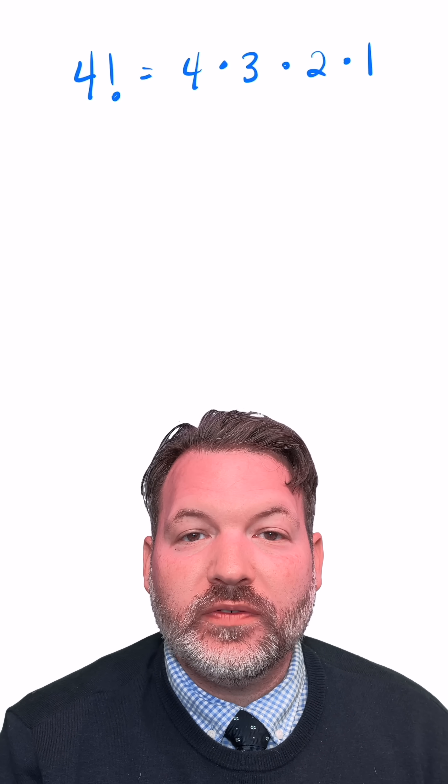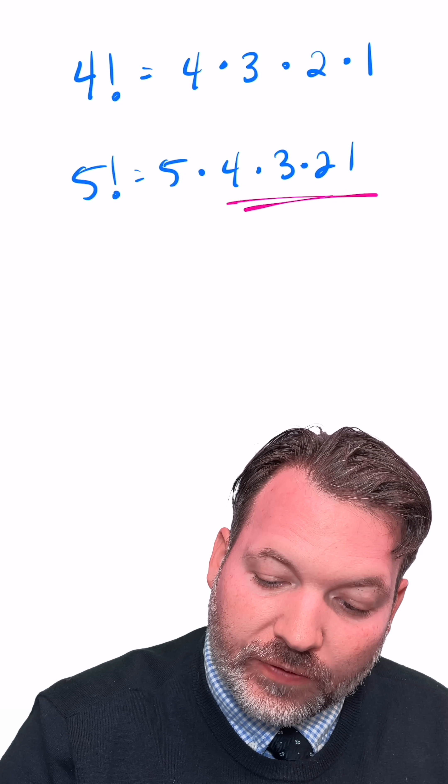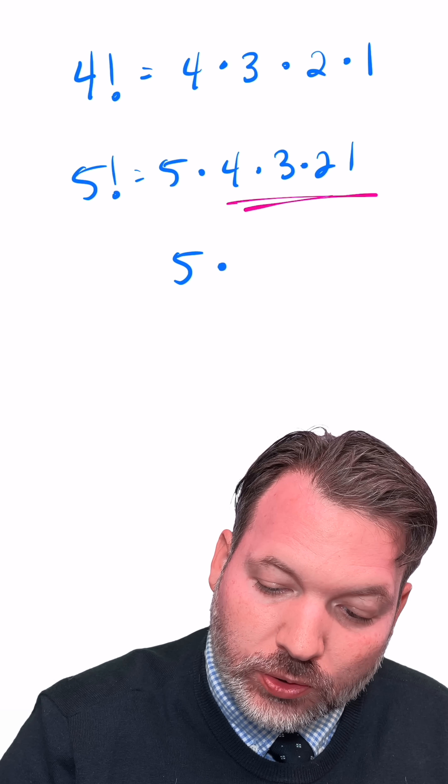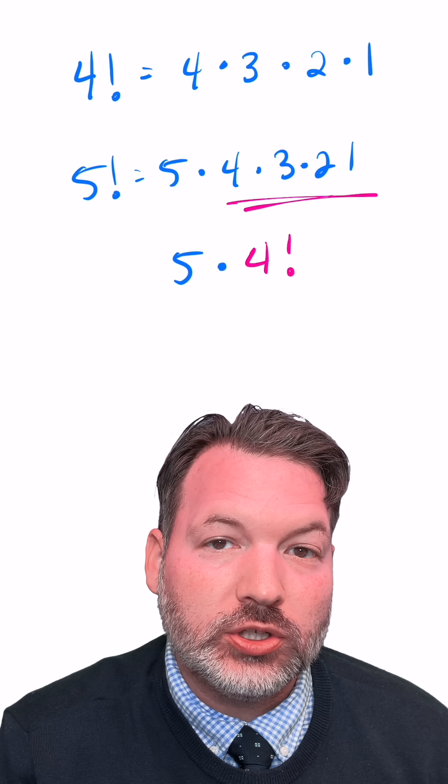Factorials have all kinds of interesting properties. Five factorial is itself the same as five times four factorial, since we can see the four times three times two times one right there in its definition.